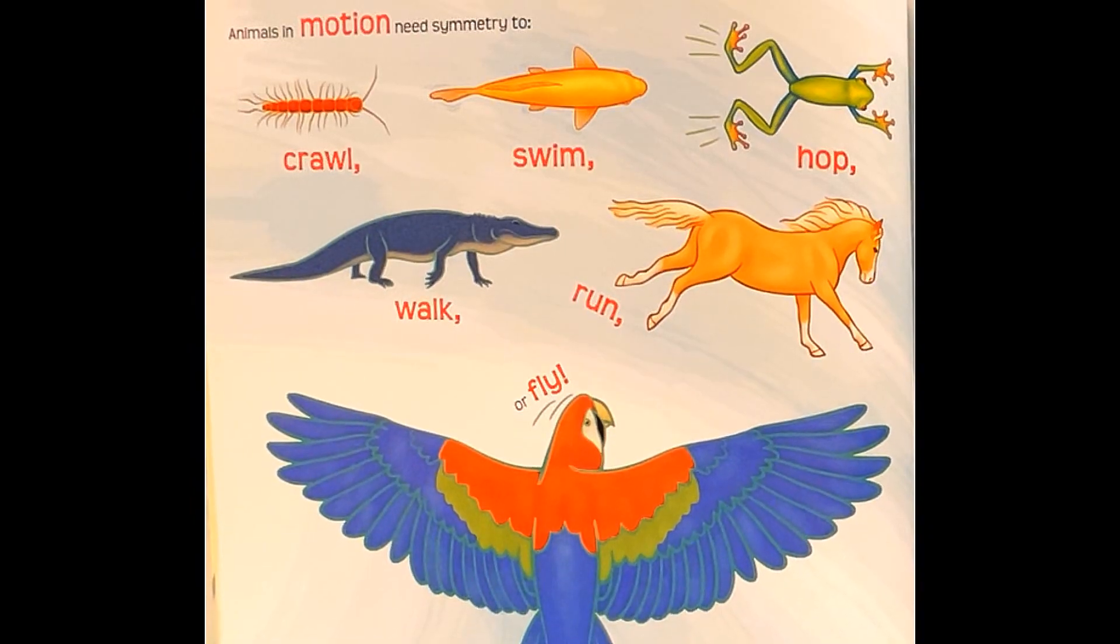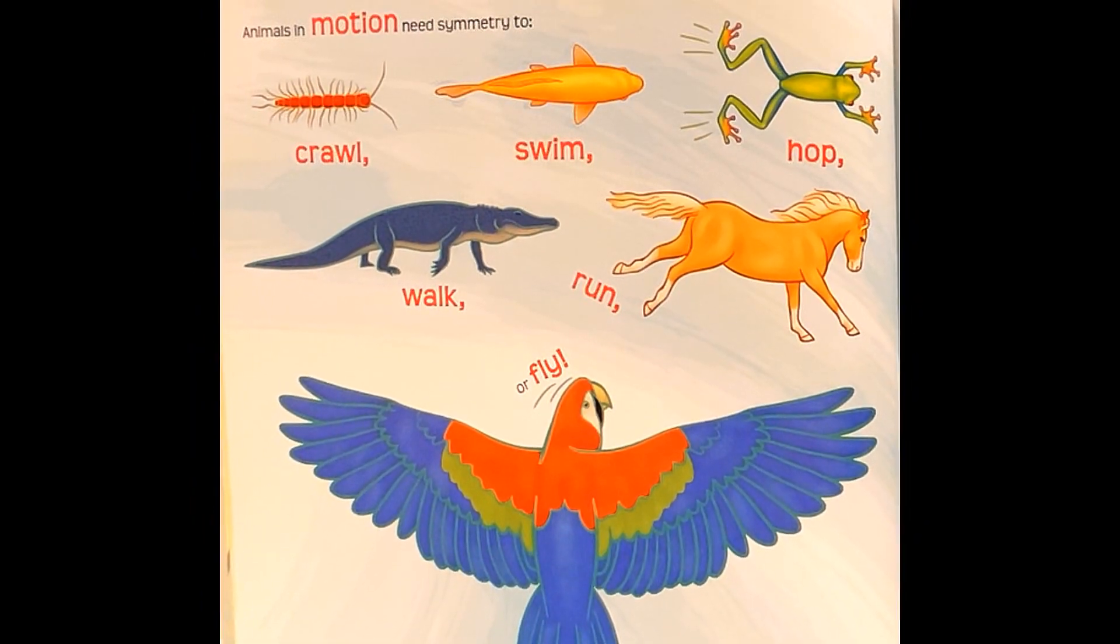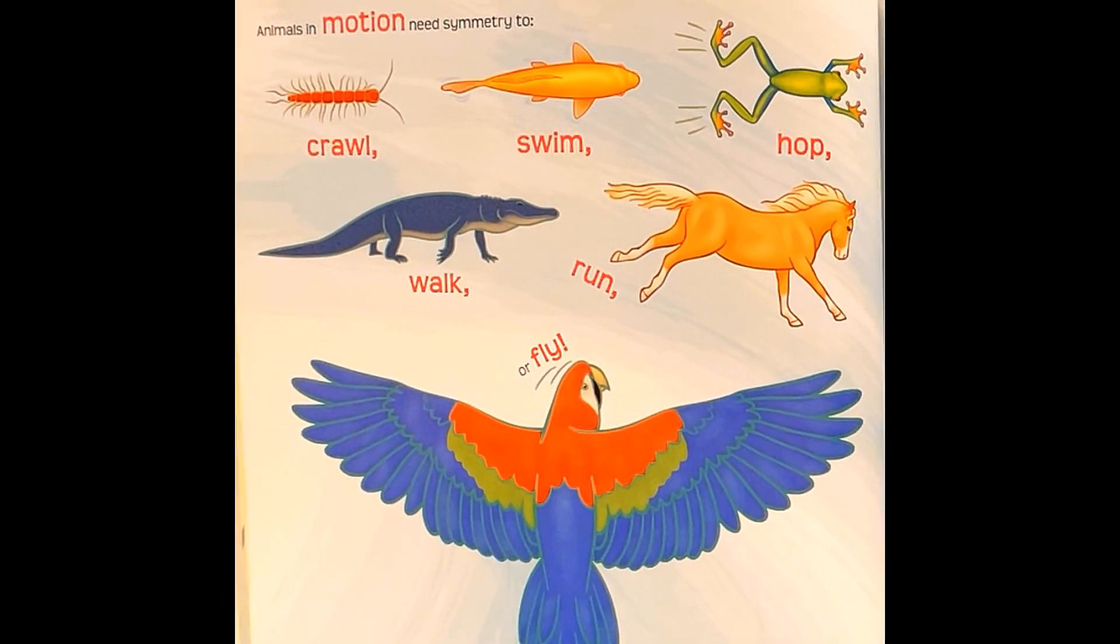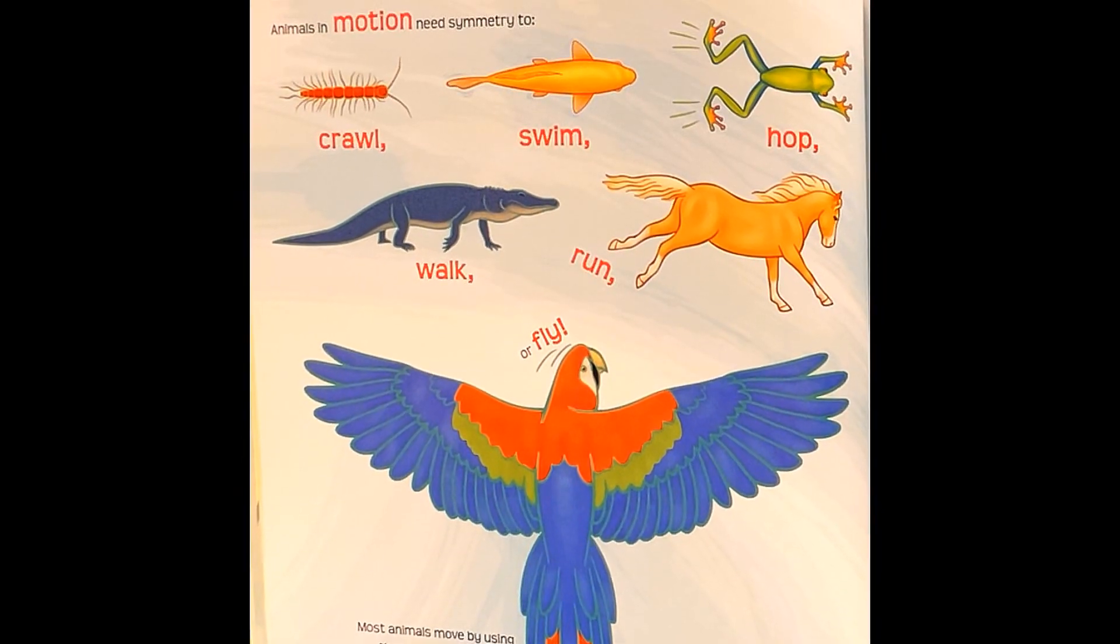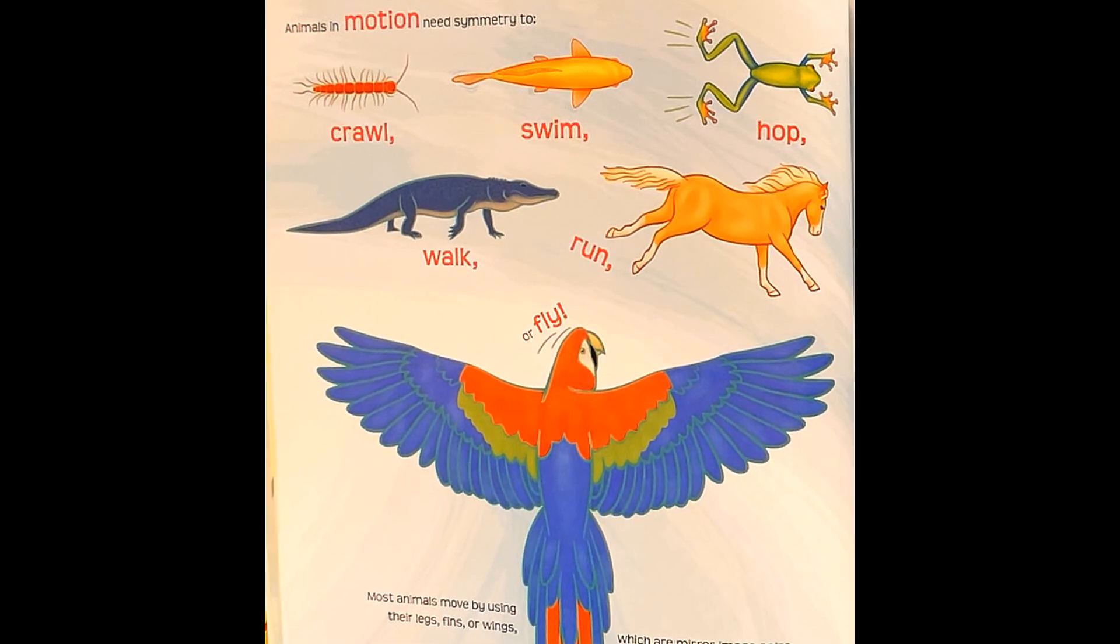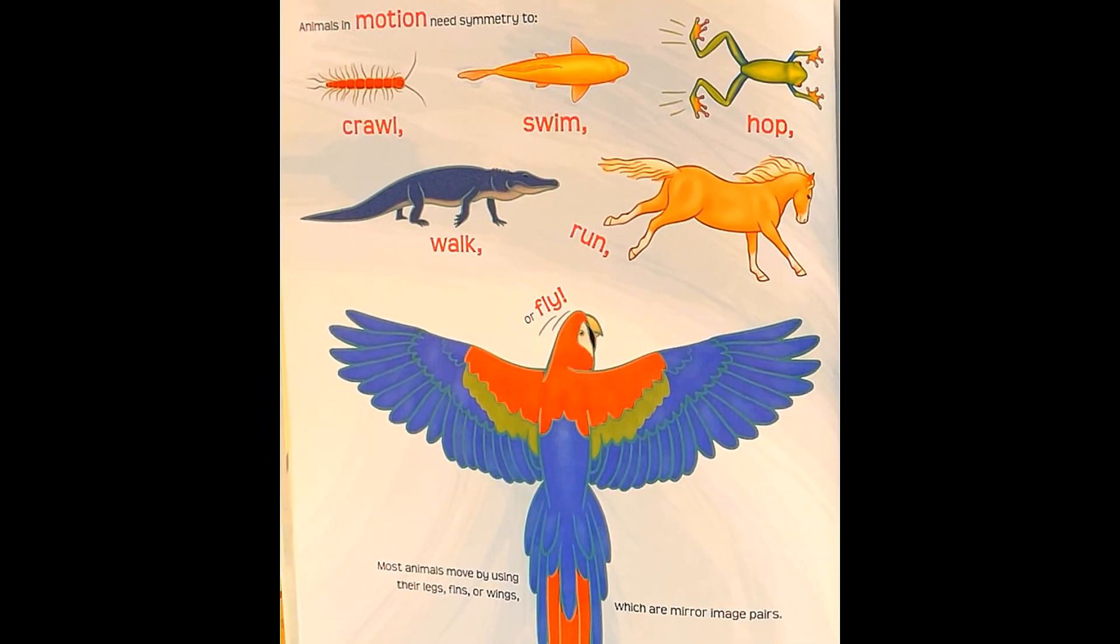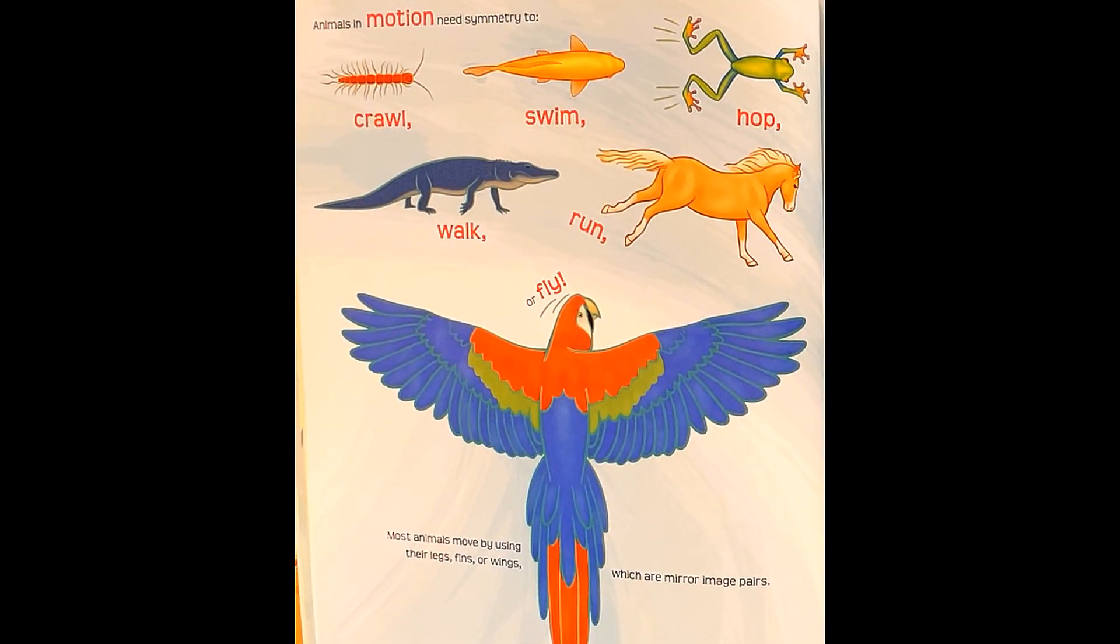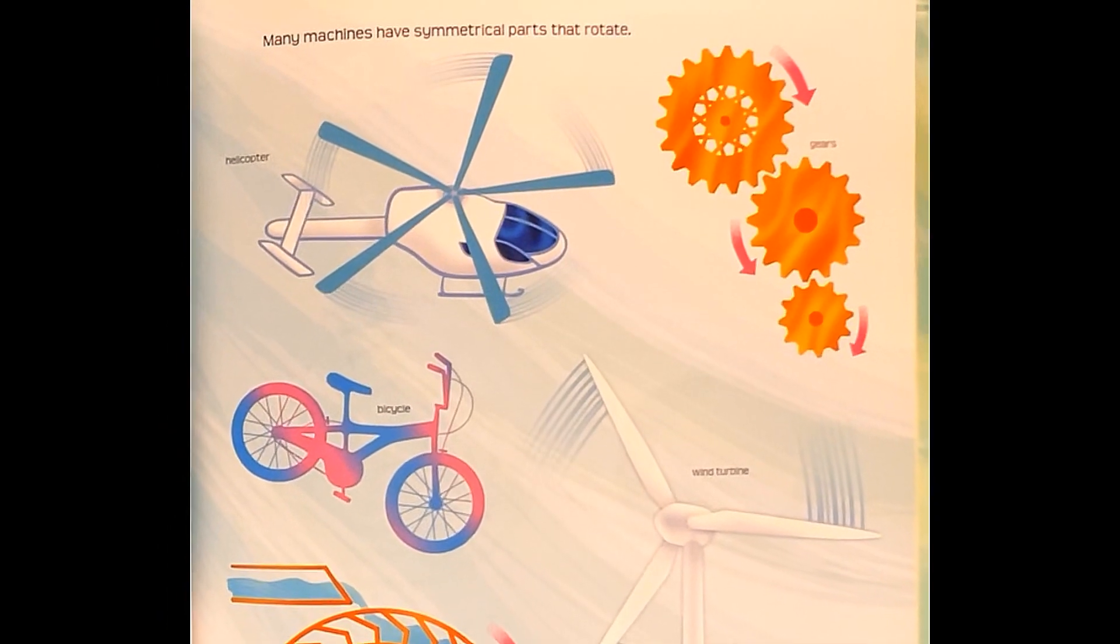Animals in motion need symmetry too. Crawl, swim, hop, walk, run, or fly. Most animals move by using their legs, fins, or wings, which are mirror image pairs. These animal bodies have lines of symmetry. But some life forms have rotational symmetry. See a few on page 29.